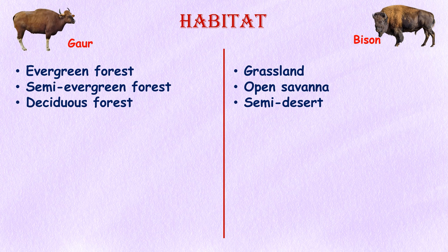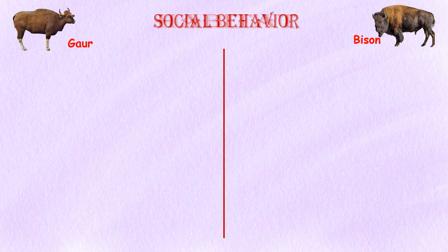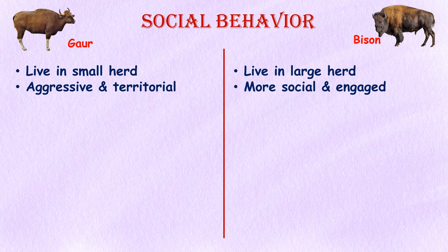Habitat: Gaurs are found in evergreen, semi-evergreen, and deciduous forests. A typical gaur habitat consists of large, almost undisturbed forest tracts, hilly terrain, availability of water, and a large presence of forage such as bamboo, shrubs, and trees. Bison historically occurred throughout the grasslands and open savannahs of North America, but were also found in boreal habitats to semi-desert habitats where grazing was suitable.